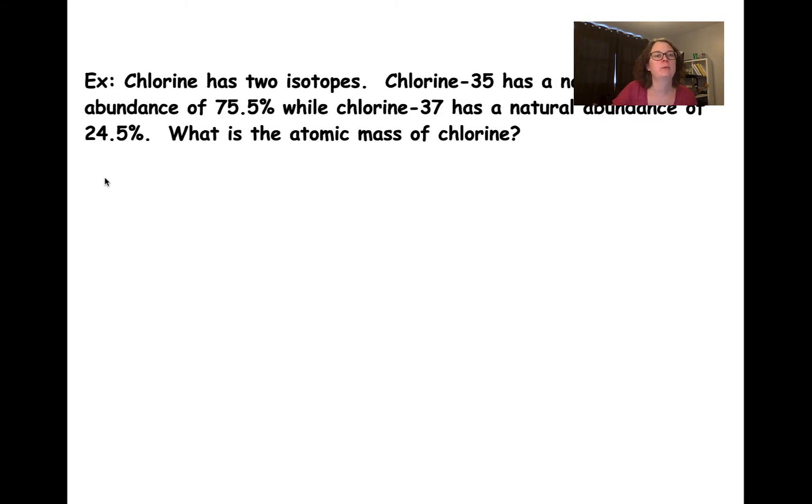So I'm going to use method one for this example. Chlorine has two isotopes. Chlorine-35 has a natural abundance of 75.5 percent, while chlorine-37 has a natural abundance of 24.5 percent.